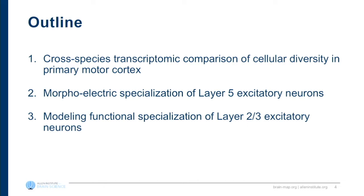Today you'll hear from Nick, who will tell you about cross-species comparisons between mouse, marmoset, and human in primary motor cortex looking at transcriptomic features of those cells. You'll hear about morphoelectric specialization in human for the layer 5 pyramidal neuron type from Brian, and then Tom will tell you about modeling work interpreting differences in morphoelectric features of layer 2-3 excitatory neurons.